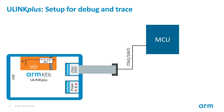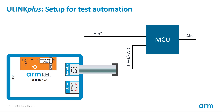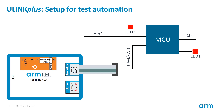So let's take a look at the example application that we want to test. Our application has two analog inputs and two signal LEDs. When an analog value goes above a threshold, the corresponding LED is active.